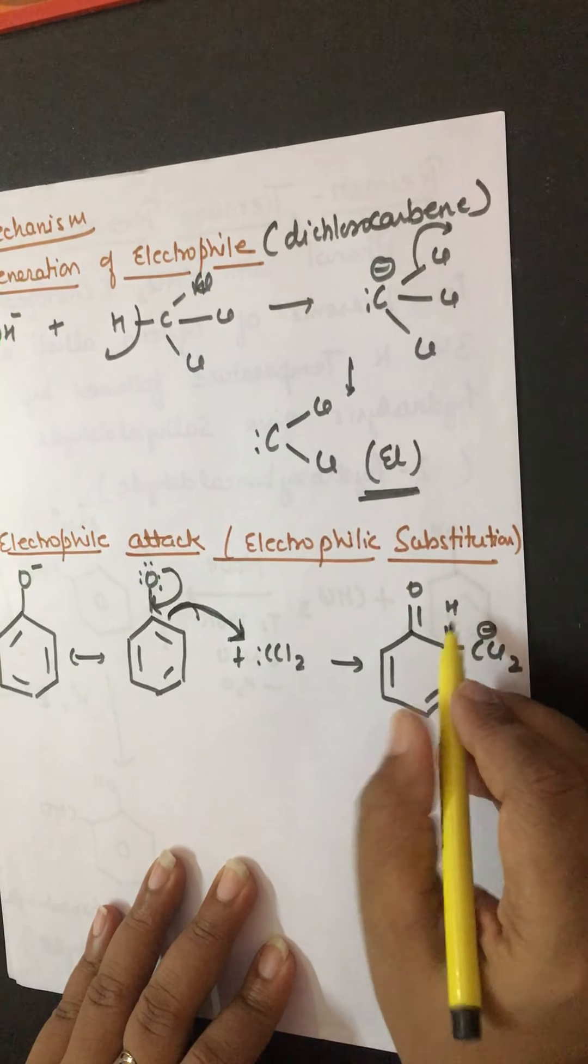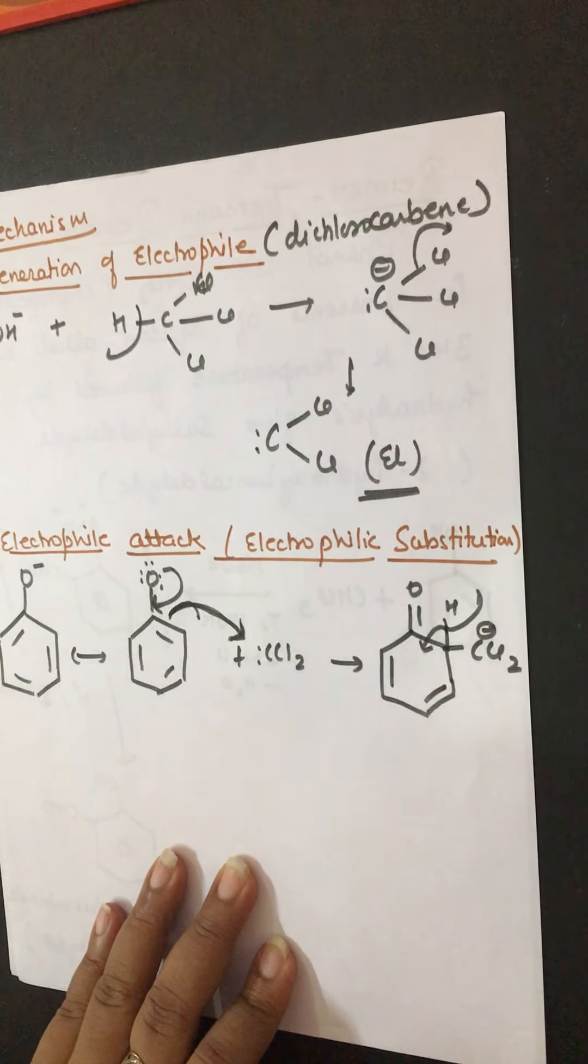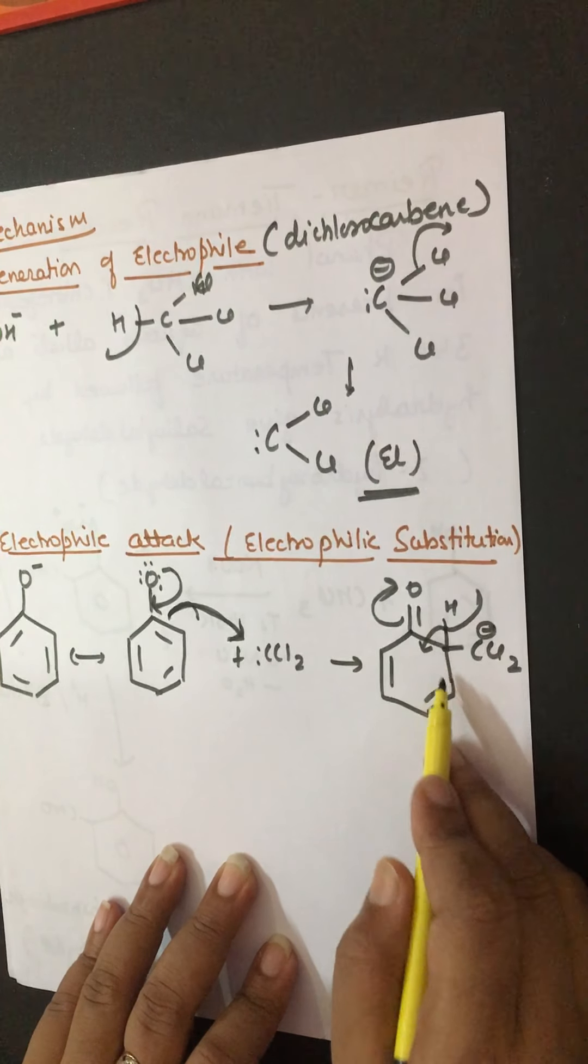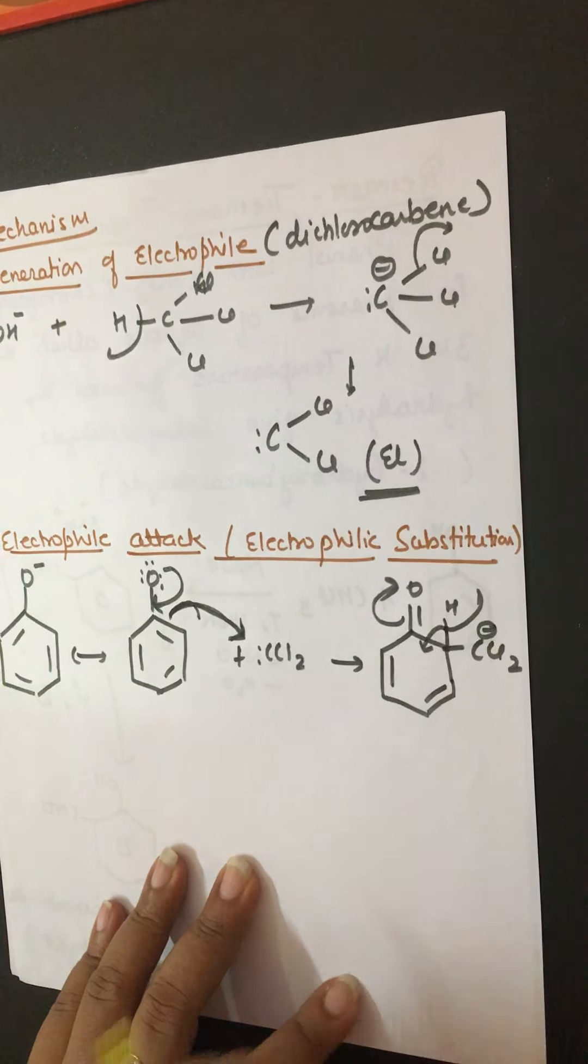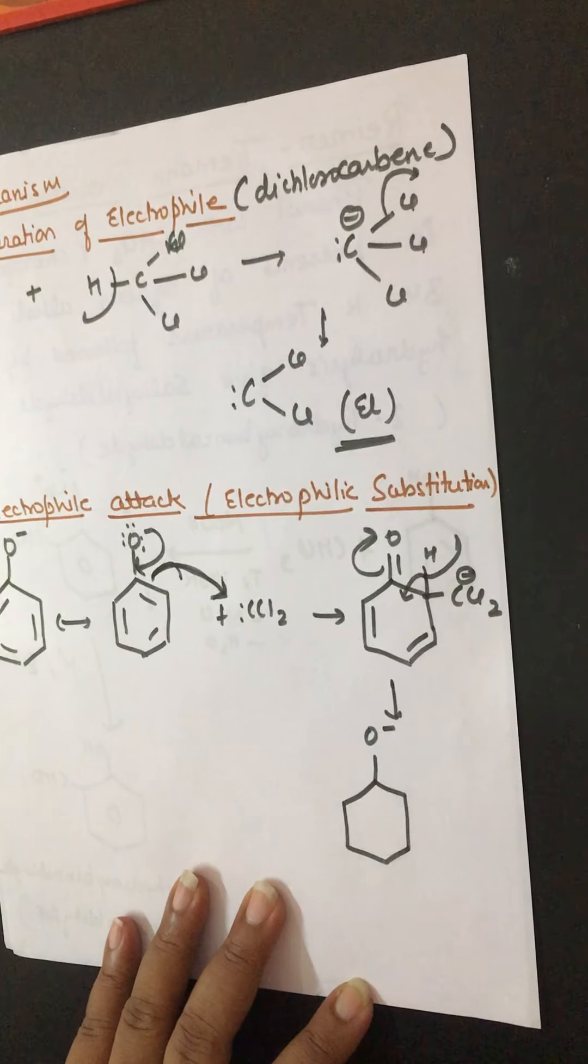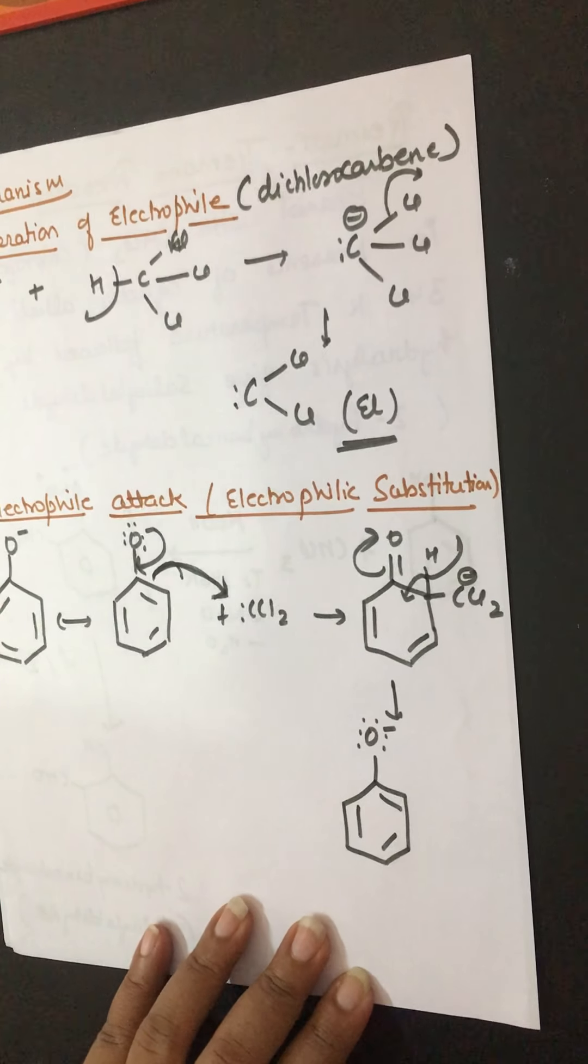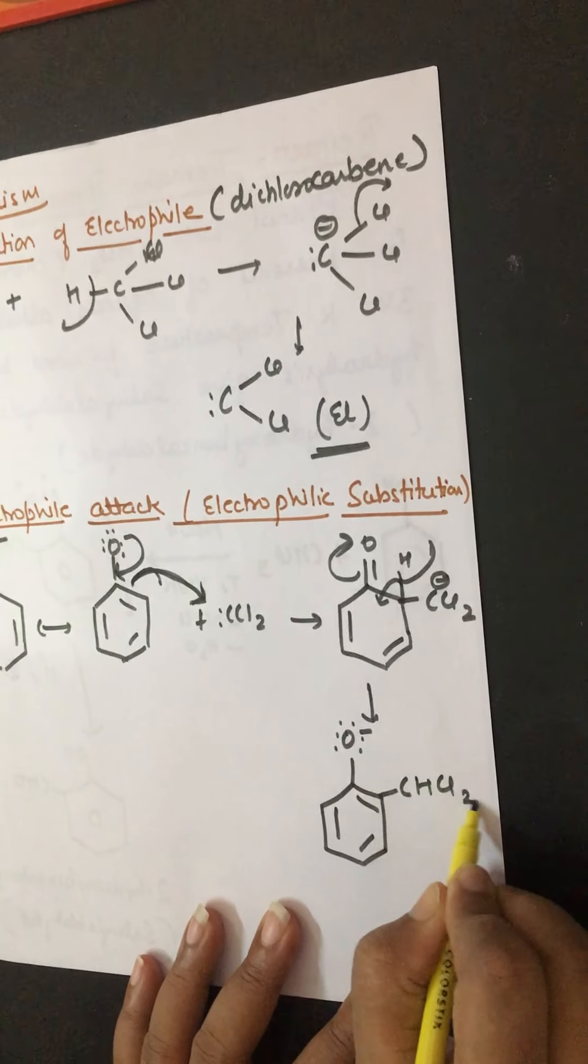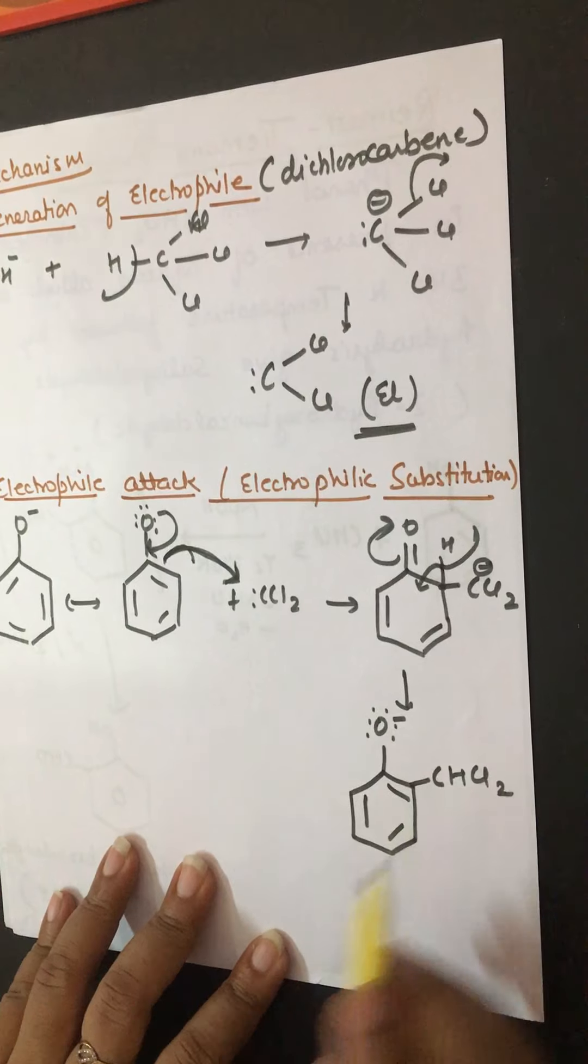Now this acidic hydrogen will be removed, and this bond will shift towards the benzene ring. Further, the double bond shifts towards oxygen, and this bond will shift towards the benzene ring to maintain aromaticity of the benzene. The situation is something like this: oxygen will carry a negative charge with lone pair of electrons, and it becomes CHCl2.